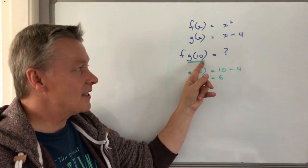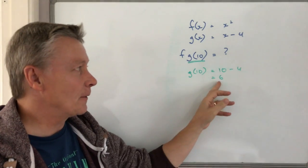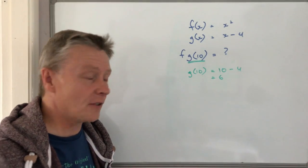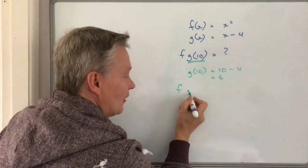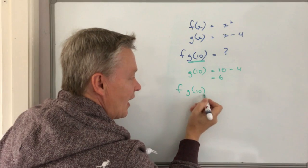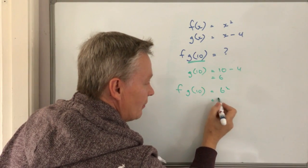So that little bit has been dealt with there and I've worked out that the g of 10 is going to be 6, and then it's really a matter of taking that 6 and applying it into the f function. So if you like then I get f g of 10 equals 6 squared which is going to be equal to 36.